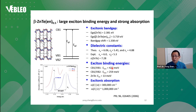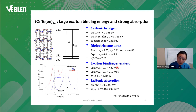Compared to zinc telluride which has only 13 meV exciton binding energy, you get a 10 to 20 times enhancement. So in principle you can achieve room-temperature excitonic and polaritonic emission.